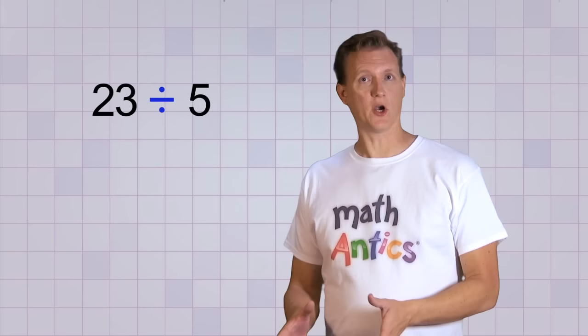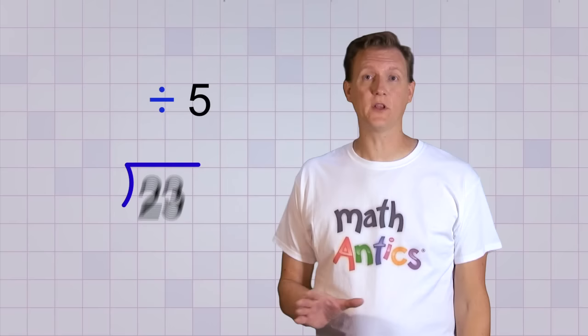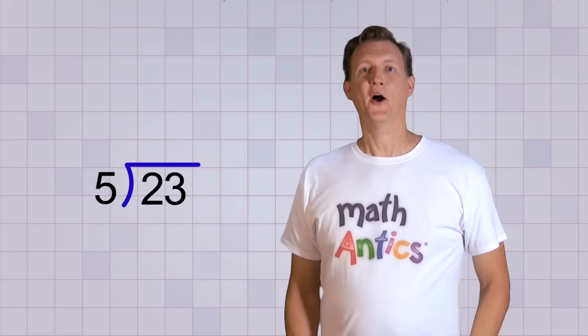Let's try a couple more so you really see how it works. Let's try 23 divided by 5. We start, as always, by making sure our problem is written correctly using our new division symbol. The 23 is what we'll be dividing up. It's our dividend. So we put it under the line. And the 5 is what we're dividing by, our divisor. So it goes out front.